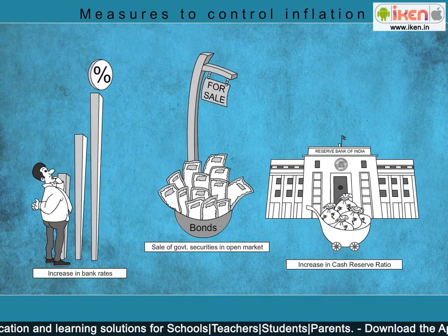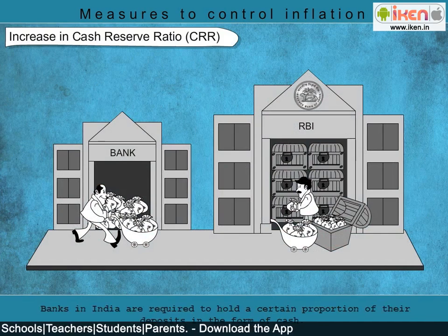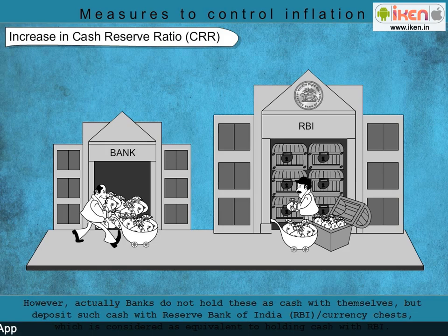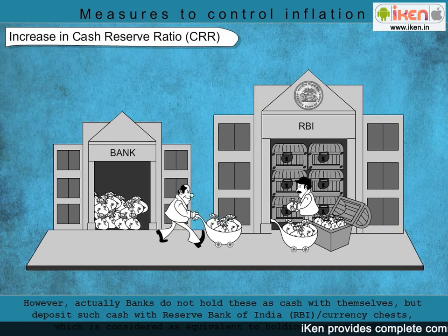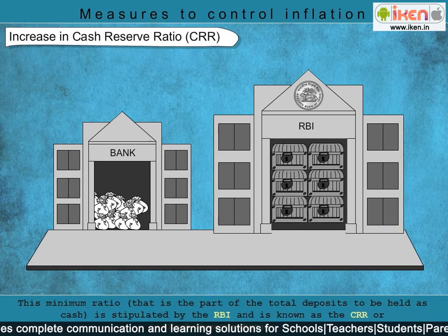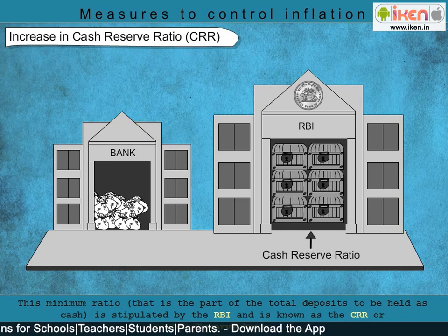Increase in Cash Reserve Ratio. CRR means Cash Reserve Ratio. Banks in India are required to hold a certain proportion of their deposits in the form of cash. However, banks do not actually hold these as cash with themselves, but deposit such cash with the Reserve Bank of India, or RBI, currency chests, which is considered equivalent to holding cash with RBI. This minimum ratio — that is, the part of total deposits to be held as cash — is stipulated by the RBI and is known as the CRR, or Cash Reserve Ratio.